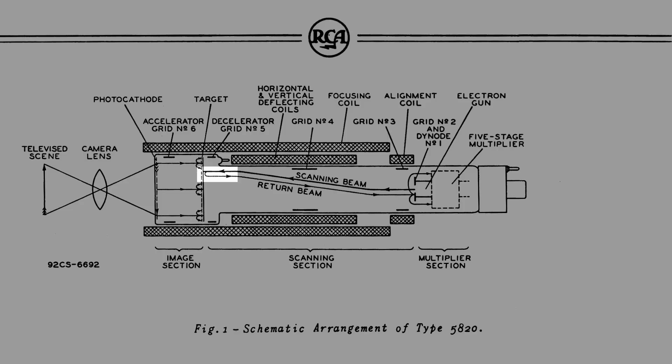The electrons stop their forward motion at the surface of the glass and are turned back and focused into a five-stage signal multiplier, except when they approach the positively charged portions of the pattern on the glass. When this condition occurs, they are deposited from the scanning beam in quantities sufficient to neutralize the potential pattern on the glass.